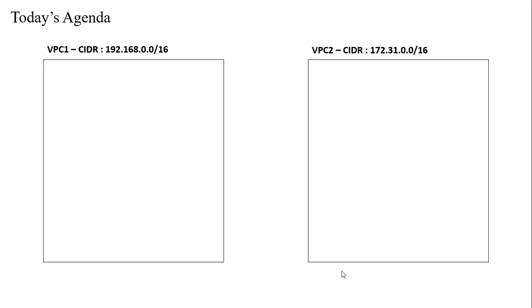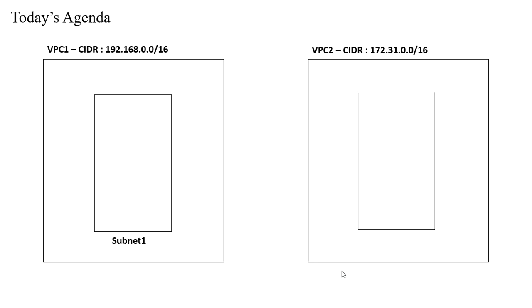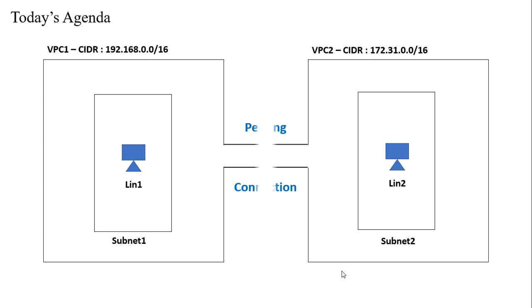Here is the agenda: we will create two different VPCs with different CIDR ranges, one subnet and one instance in each VPC, and establish a VPC Peering Connection between them. Through this connection, we will be able to communicate using private IPs between the two different instances.